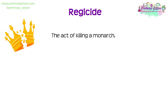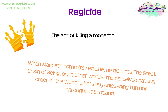Number six is regicide. Regicide is the act of killing a monarch. In a sentence: 'When Macbeth commits regicide, he disrupts the great chain of being — in other words, the perceived natural order or state of the world — ultimately unleashing turmoil throughout Scotland.'